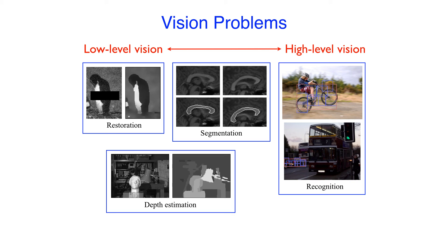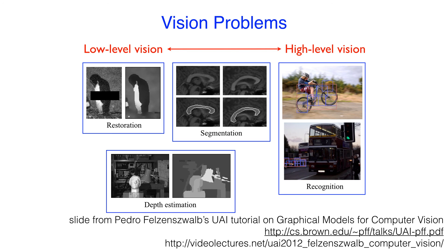You can do more high-level things as well by modeling high-level variables like the locations of objects or the location of shapes. This is a slide from Pedro Felzenszwalb's UAI 2012 tutorial on graphical models for computer vision, where he went over a bunch of these applications. You can follow the links to watch that tutorial if you're interested.